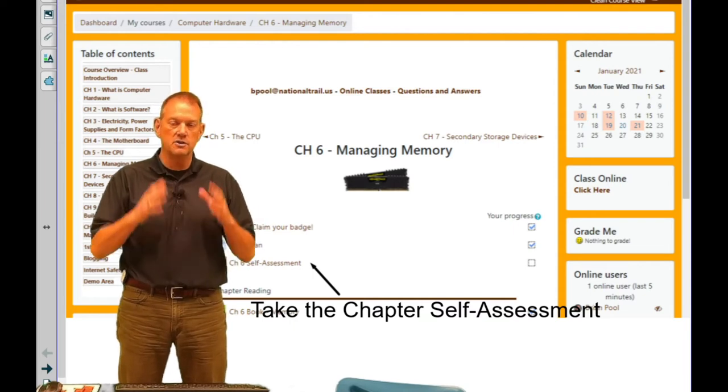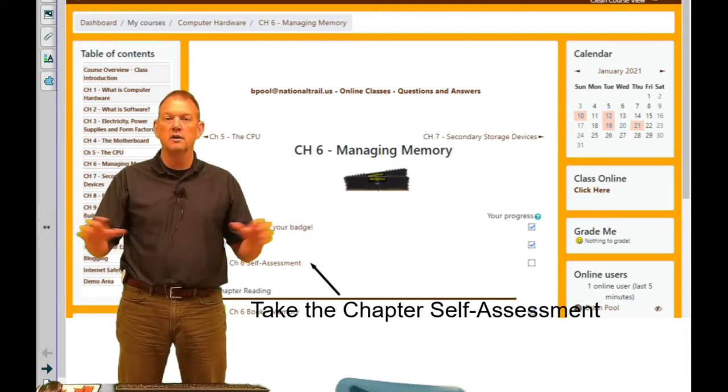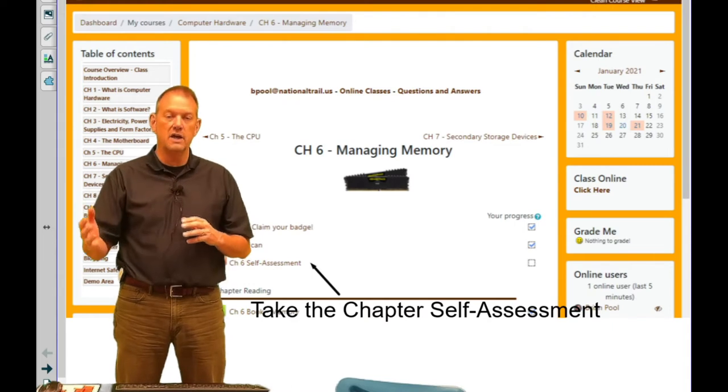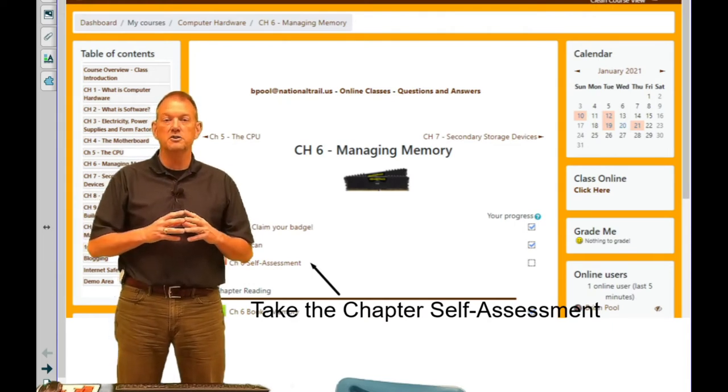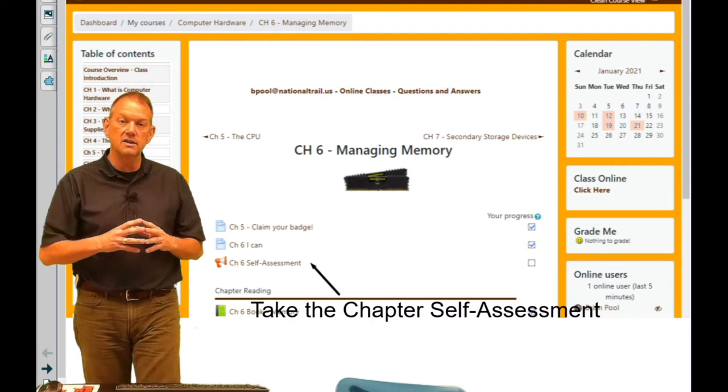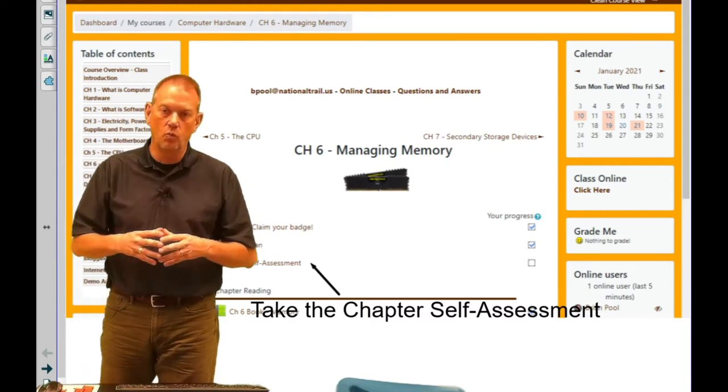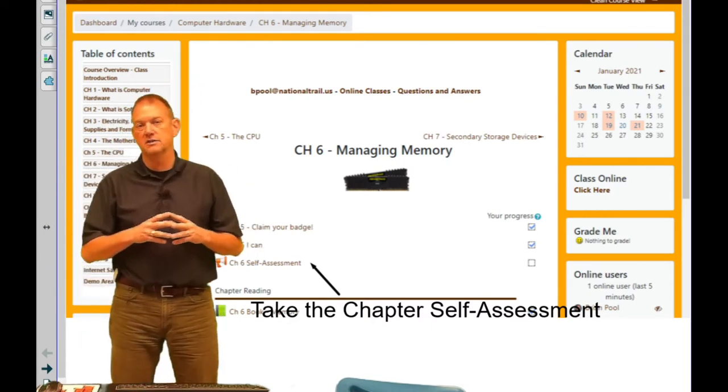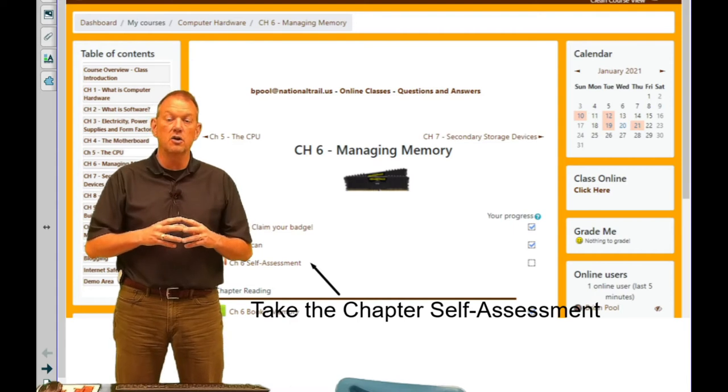When we reboot our device, everything in memory is gone, which is why we call it volatile. We talk a little bit this chapter about memory leakage and what that is and why it's volatile and why rebooting our computer fixes things so easily. So remember those things.